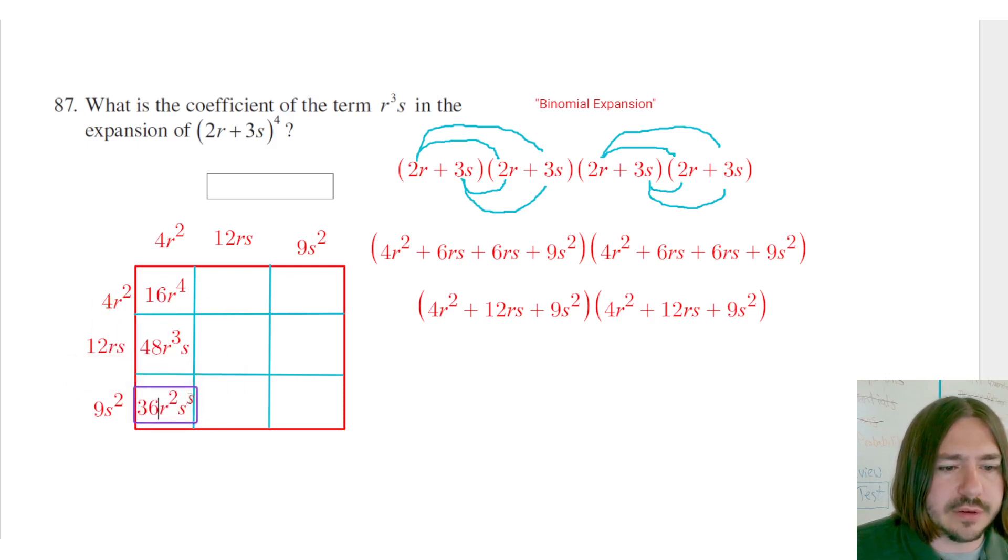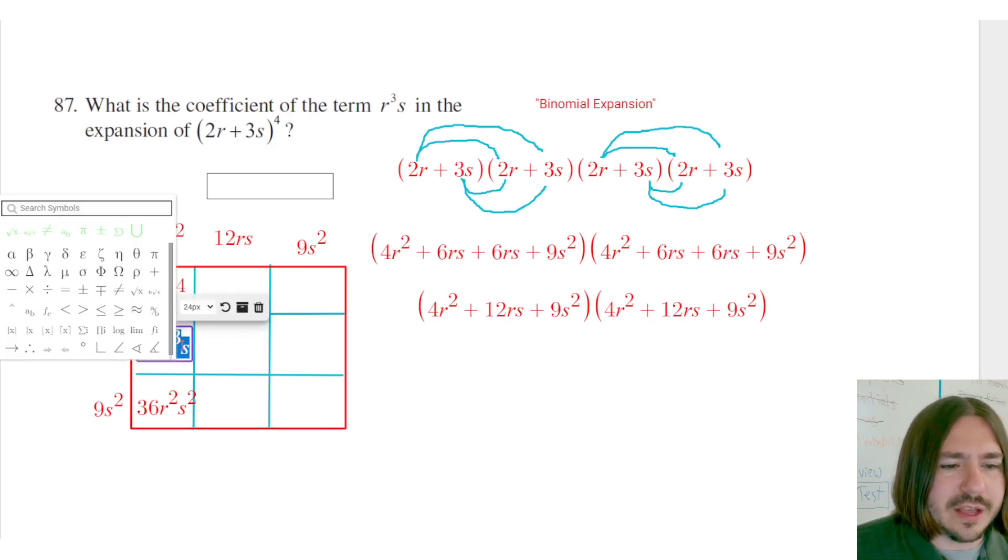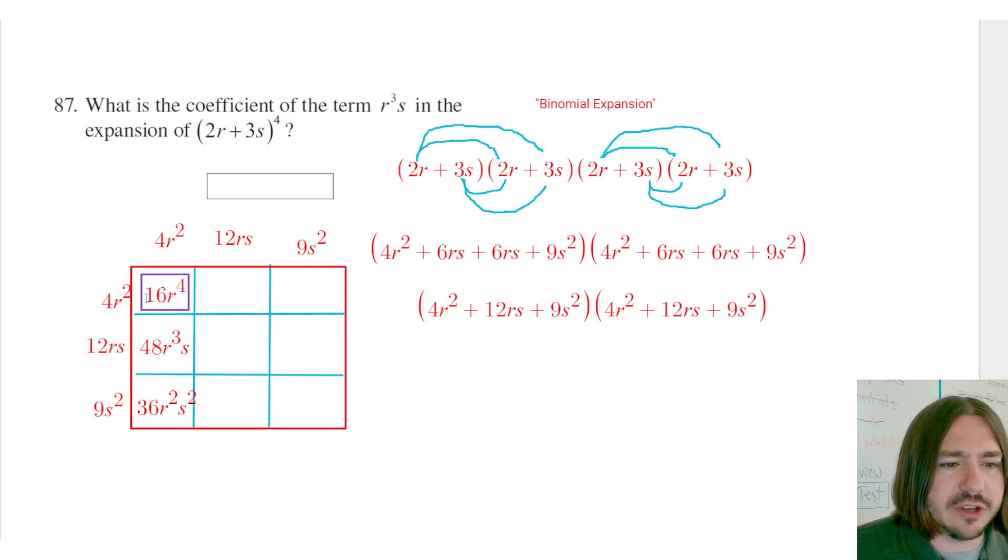Okay, barely fits in there, but it'll do. We don't really care about that term anyway. Oh, and my box disappeared for some reason. Let's throw that back in there. Okay, I must be pressing some kind of button. All right, so now doing the other multiplications down this first row, we're going to get the same things because we're just multiplying the same terms again. So I have another 48r cubed s and another 36r squared s squared.